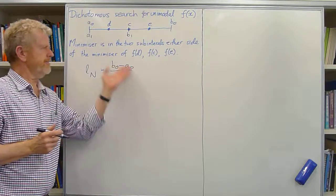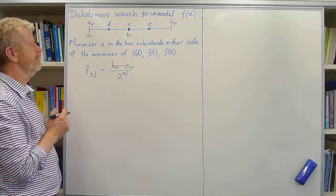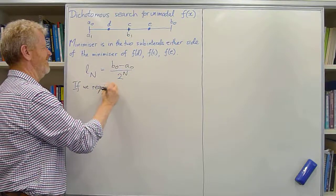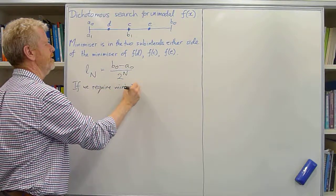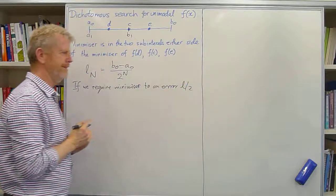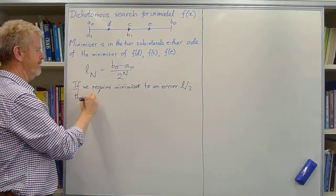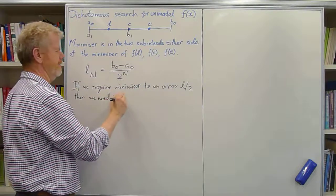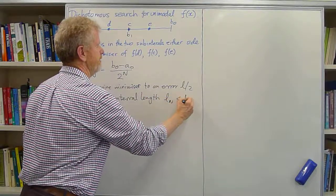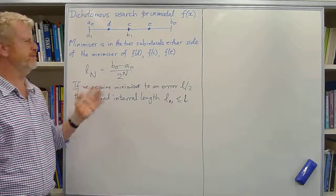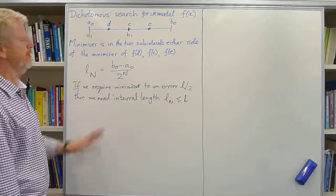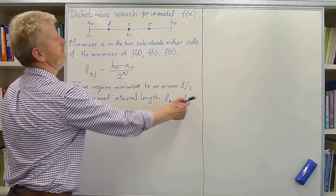And now, what does that tell us? This tells us how many iterations we need to do. So if we require a minimizer to an error of l over 2, that means that we need the interval length after n iterations to be less than or equal to l. So then we can say the minimizer is the middle of that interval, plus or minus half of its length. So the question is, when does this hold? How many n do we need to get that?